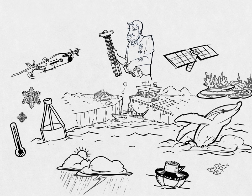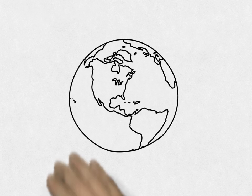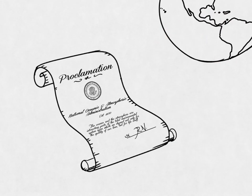By 1970, it was clear that the atmosphere and a healthy ocean are linked. And a new agency was born, the National Oceanic and Atmospheric Administration.